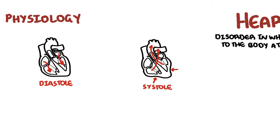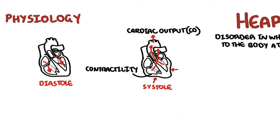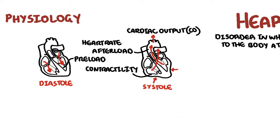Systolic function of the heart and resulting cardiac output is governed by four major determinants. These are the contractility of the myocardium – the actual muscle of the heart – the preload of the ventricles, which is the amount of blood filling the ventricles prior to systole, the afterload applied to the ventricles, which is essentially what the ventricles have to overcome to push blood out of the heart, and the heart rate.